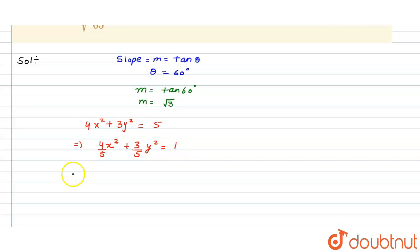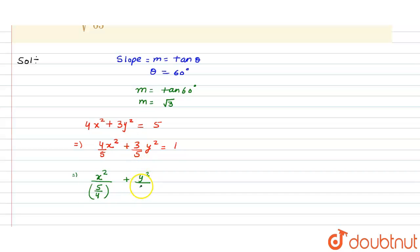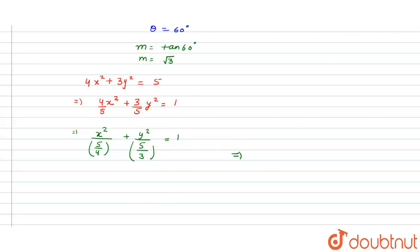From here we get x² divided by 5/4 plus y² divided by 5/3 equal to 1. This is the standard form of the ellipse equation: x²/a² + y²/b² = 1.